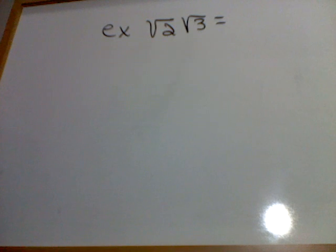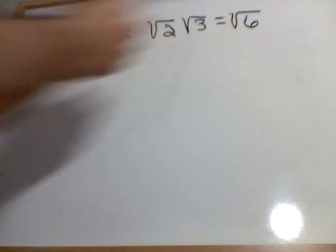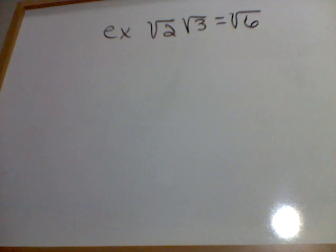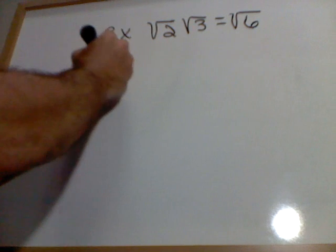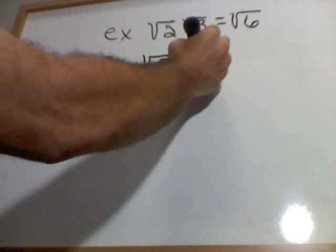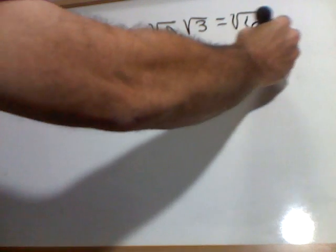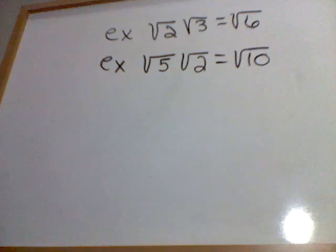Square root of 2 times square root of 3. Square root of 6 stays under the radical. Square root of 5 times square root of 2 equals square root of 10 stays under the radical.